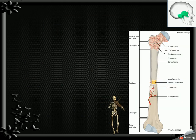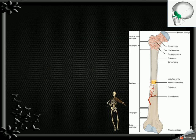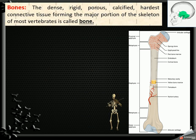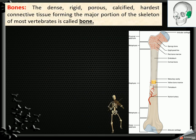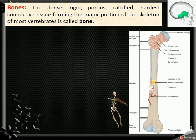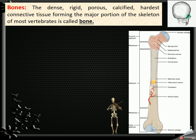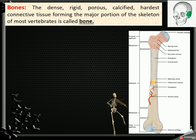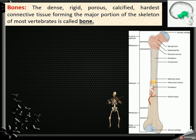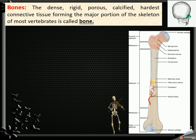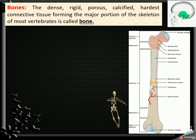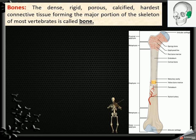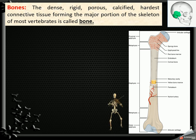So first one is bones. What is bone? The dense, rigid, porous, calcified, hardest connective tissue forming the major portion of the skeleton of most vertebrates is called bone.